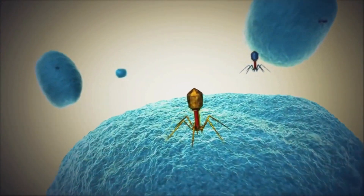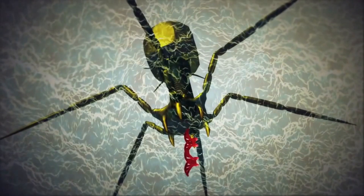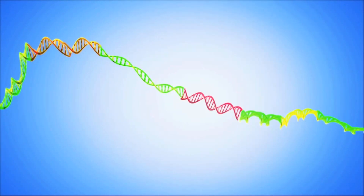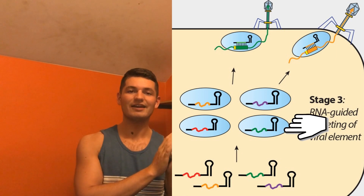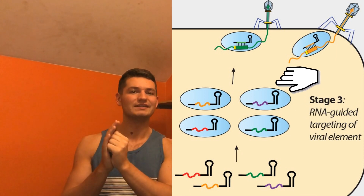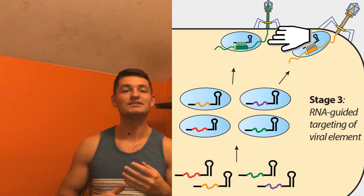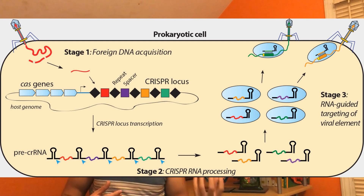If a virus is attacking the cell and the cell has already been exposed to that virus before, the CRISPR RNA sequence will exist in the bacterial genome. That CRISPR RNA sequence is going to bind to a Cas protein and carry that Cas protein to the viral DNA that's infecting the host, and then the Cas protein can cut up and destroy the viral DNA, preventing an infection.